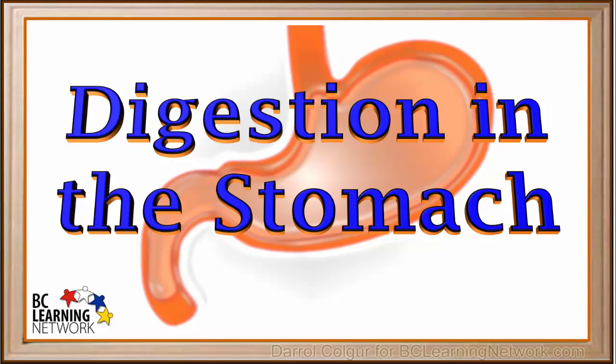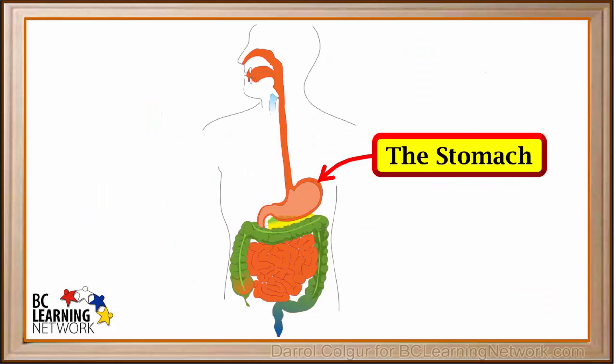A very important organ in the digestive system is the stomach. The stomach is located just below the esophagus in the digestive system. Partially digested food from the esophagus passes into the stomach, where more digestion takes place.